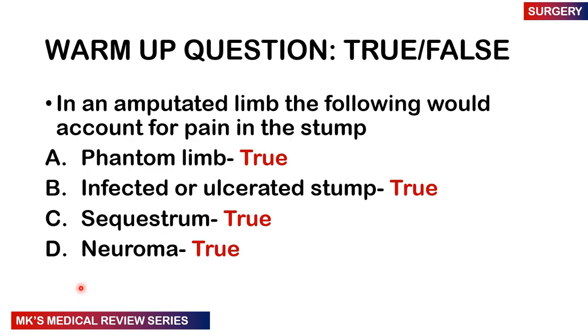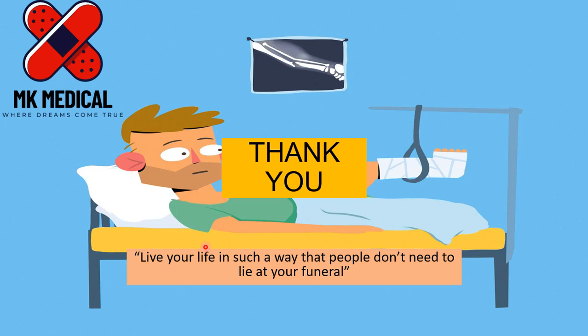Coming back to our warm-up question: in an amputated limb, all four options account for pain in the stump — phantom limb is true, infected or ulcerated stump is true, sequestrum is true, and neuroma is also true. I really hope you enjoyed this brief overview of amputations. If you did, consider subscribing and hitting the bell notification icon. See you in the next video — to Zambia and beyond. My name is Dr. Moses Kazeev. Until next time, bye bye.